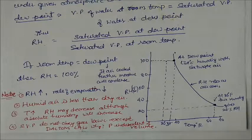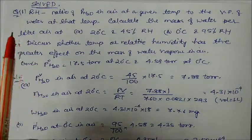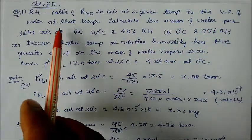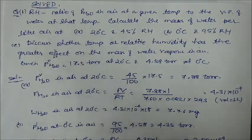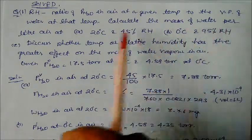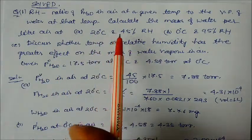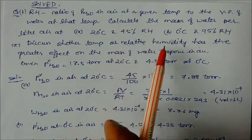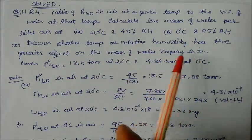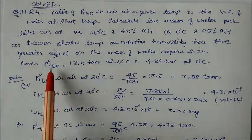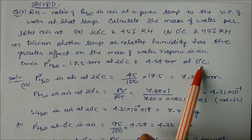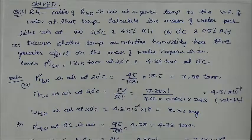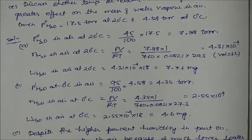We will now look at problems with relative humidity. Problem: Calculate the mass of water per liter in air at 22°C with relative humidity 45%, and at 0°C with relative humidity 95%, and discuss whether temperature or relative humidity has the greater effect. Given: vapor pressure of pure water at 22°C is 17.5 torr, and at 0°C it is 4.58 torr.